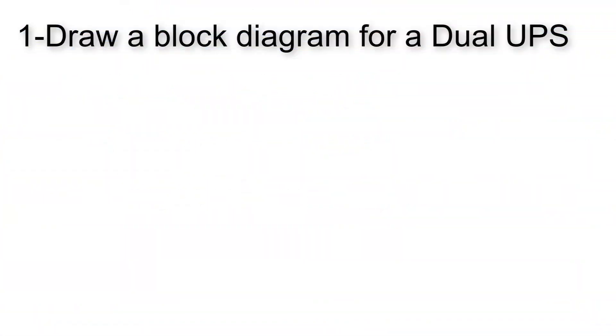The first question we have here is draw a block diagram for a dual UPS. Well, UPS or uninterruptible power supply is used to ensure delivering stable power supply for critical loads. Here we have the main AC supply that will be connected to a converter that will convert it into a DC source.